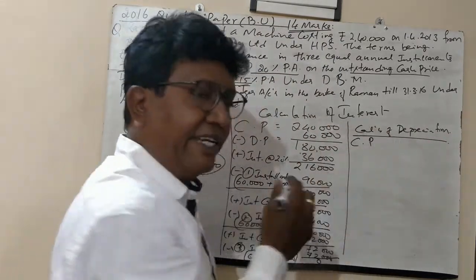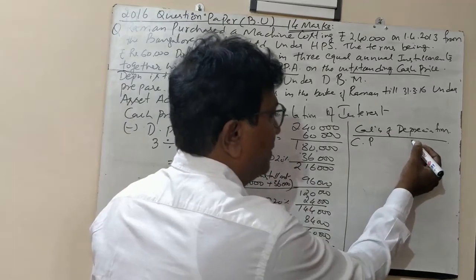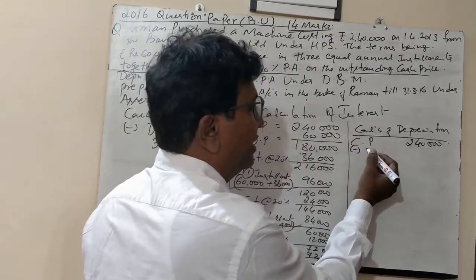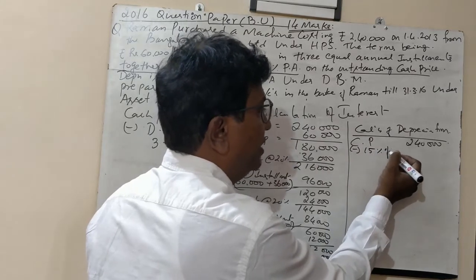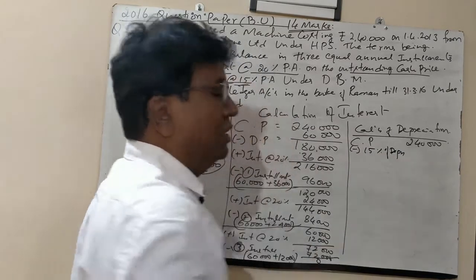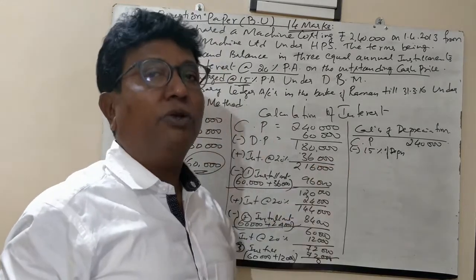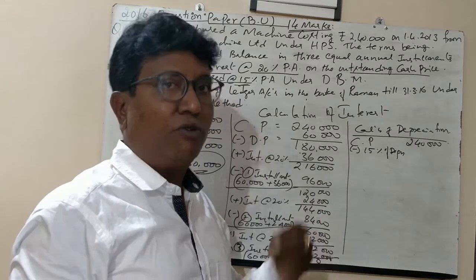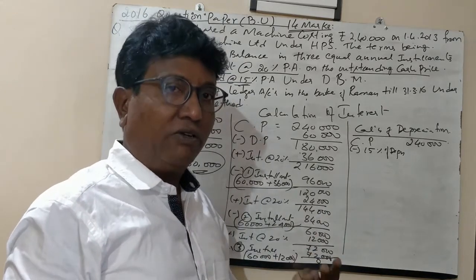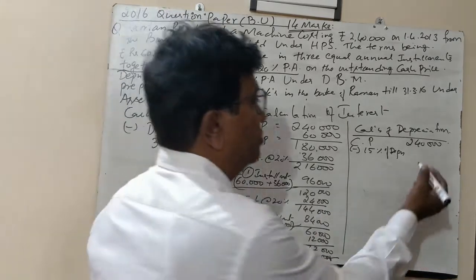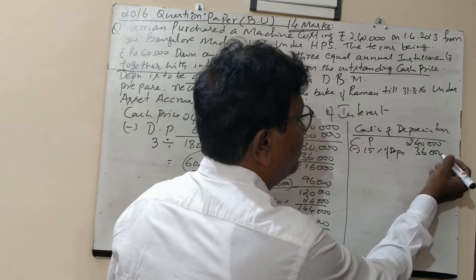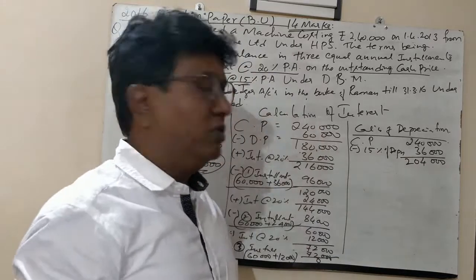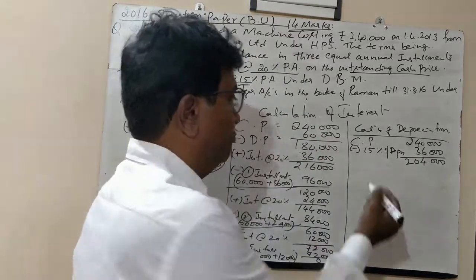We should always take the cash price for depreciation. The cash price is ₹2,40,000. We calculate 15% depreciation on this. 10% of ₹2,40,000 is ₹24,000 and half of that is ₹12,000, so 15% equals ₹36,000. This gives a balance of ₹2,04,000 at the end of year one.